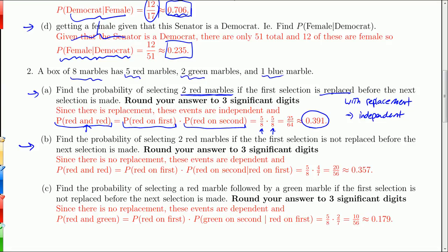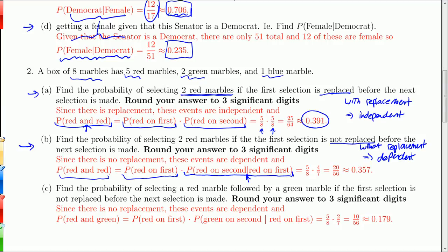Now the same question but without replacement, meaning the events are dependent. The probability of red on the first is 5/8. Then for the second red, given a red was already taken, there are only 4 reds left and only 7 marbles total. So the probability of red on the second given red on the first is 4/7. Multiplying them together gives 0.357.